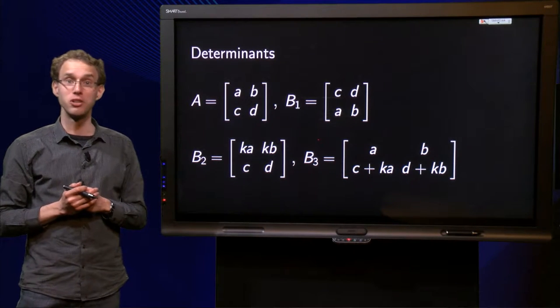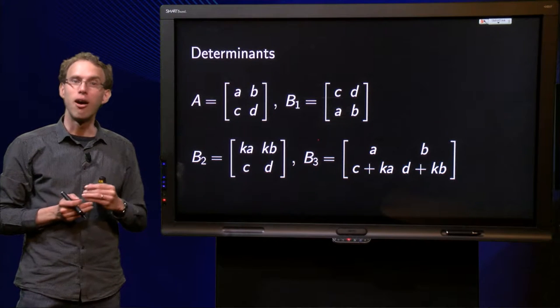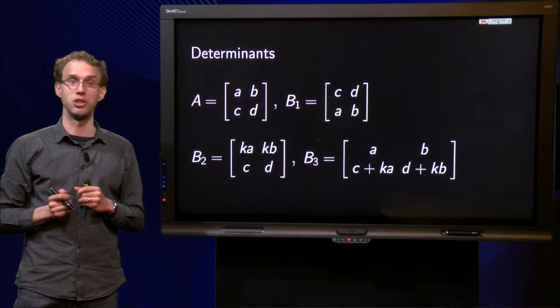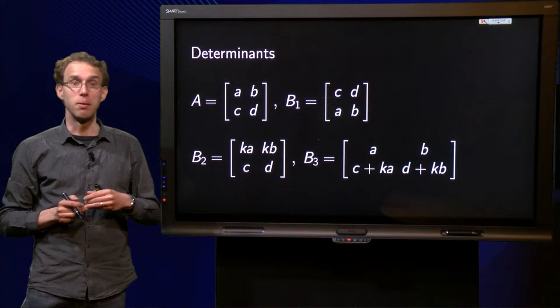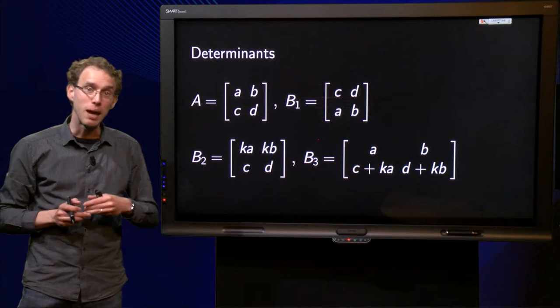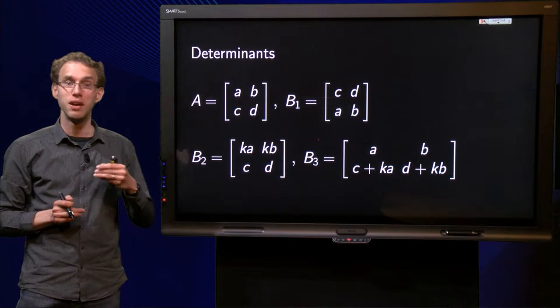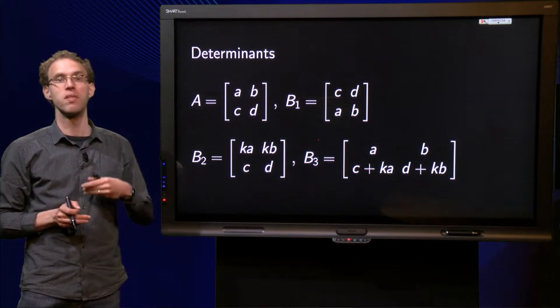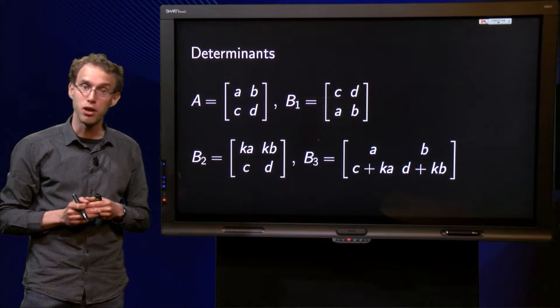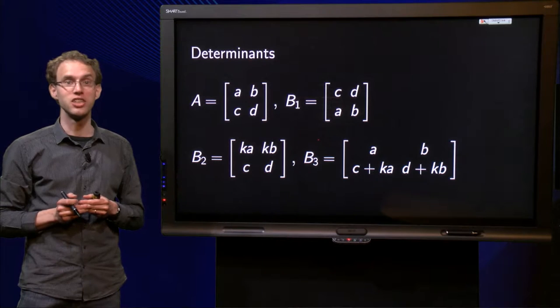You know that row reduction changes a matrix. However, sometimes properties are preserved during row reduction. You can think, for example, about the dependence relations between the columns. But what happens with the determinant of a matrix if we apply row operations? At first sight, you may expect that the determinant changes a lot, because the numbers in the matrix change a lot.